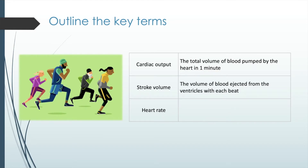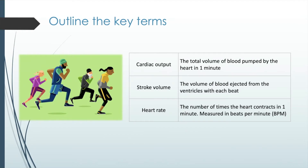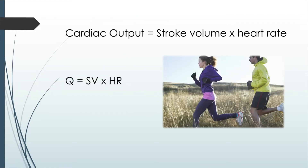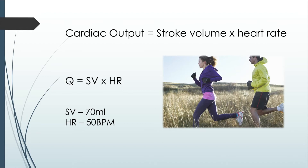Heart rate is the number of times the heart contracts in one minute, measured in beats per minute. Looking at the equation, cardiac output equals stroke volume multiplied by heart rate. The symbol for cardiac output is Q — worth knowing for exam questions. For example, a stroke volume of 70 millilitres and a heart rate of 50 beats per minute gives a cardiac output of 3.5 litres per minute.